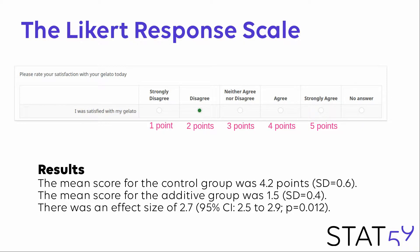To analyze the data, the usual thing most of us do is arbitrarily assign points to each of these blocks. Here, I assign one point to strongly disagree and five points to strongly agree, with two, three, and four points in between. Then I take the mean, the standard deviation, and do a t-test. I find that the mean score for the control group was 4.2 points, the mean score for the additive group was 1.5, with an effect size of 2.7 and a p-value of 0.012.